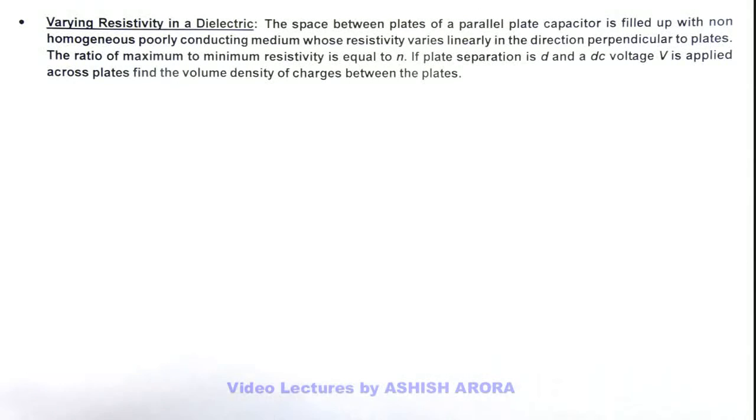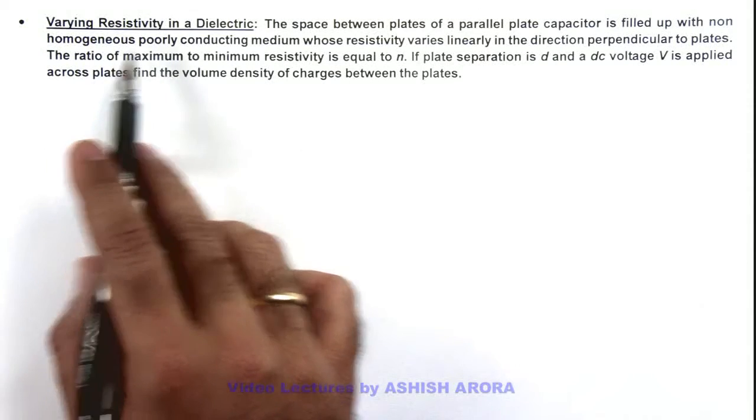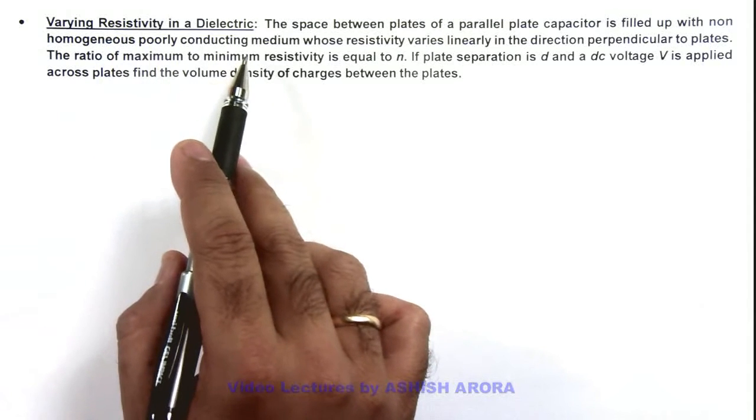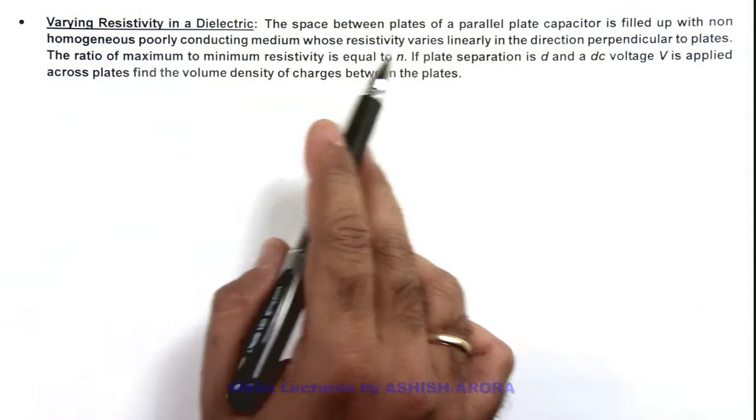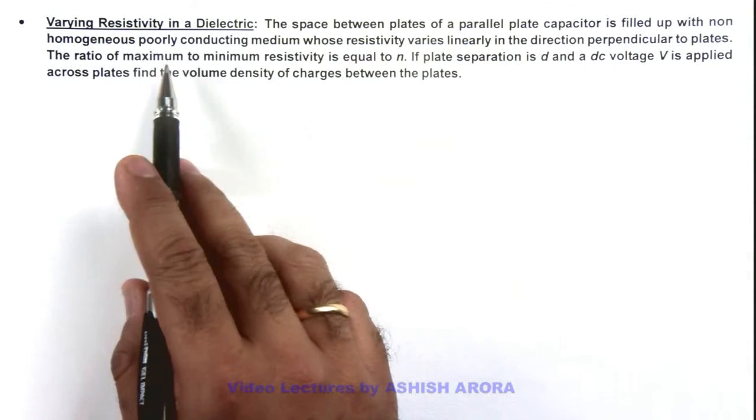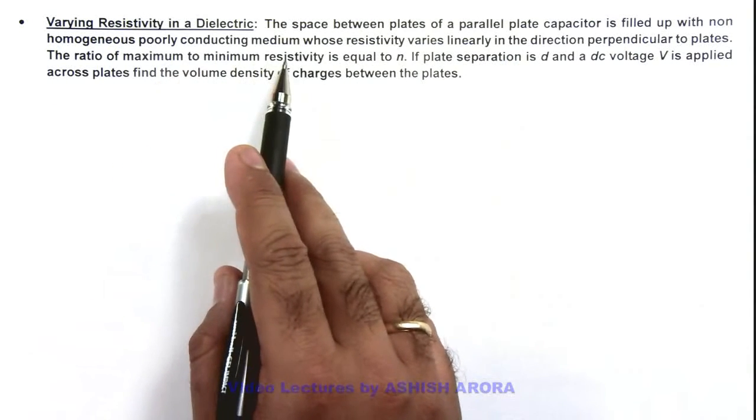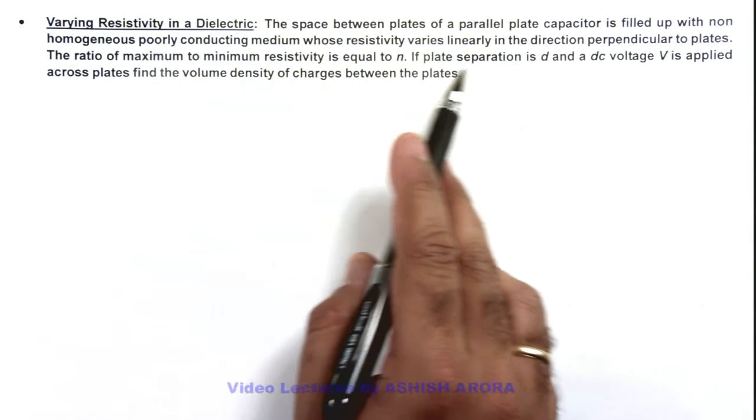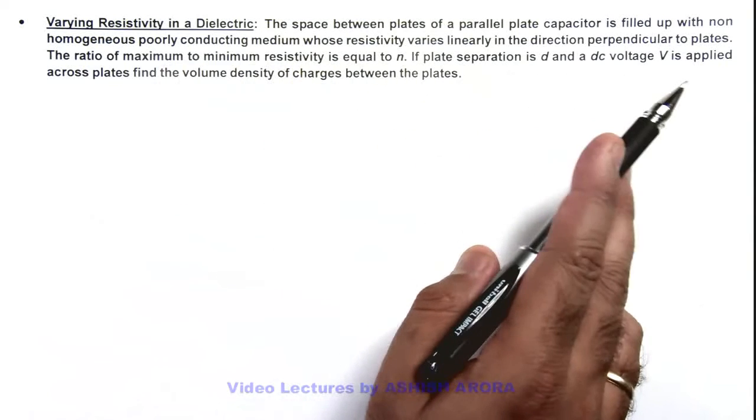In this illustration we'll study about the varying resistivity in a dielectric. We are given that the space between the plates of a parallel plate capacitor is filled up with non-homogeneous, poorly conducting medium whose resistivity varies linearly in the direction perpendicular to plates.